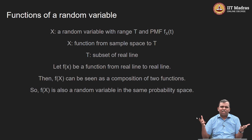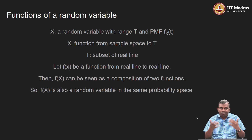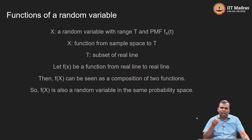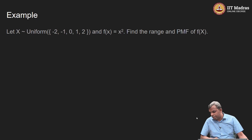So f(X) is also a random variable. If you have X as a random variable and f as a function, f(X) is another random variable. It is reasonable to think of it this way. The best way to understand what to do with functions of a random variable is to look at a few examples and then talk about the general thing.